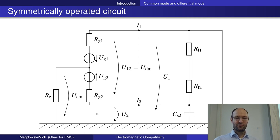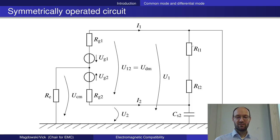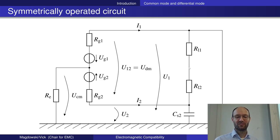Looking at the topic of common mode and differential mode currents, what you usually have is symmetrically operated circuits. On one side we have a source, on the other side a load. Symmetric means the source is built like two mirrored sources — one positive, one negative — with a midpoint in the center. The same applies to the load, with two load resistances in series creating a midpoint, giving a symmetry axis in the center where you could flip the circuit around.